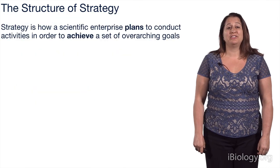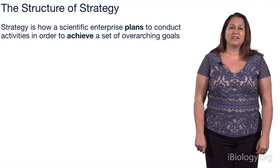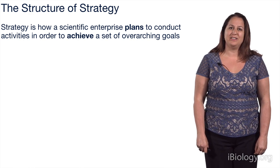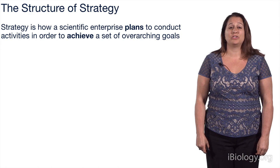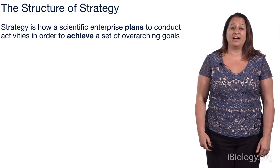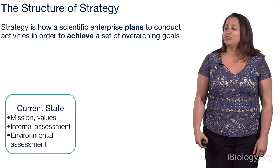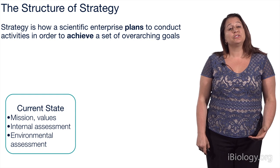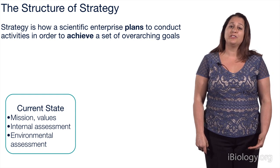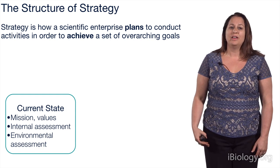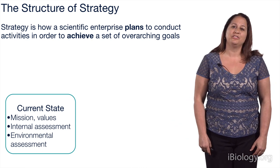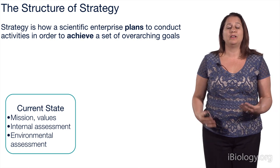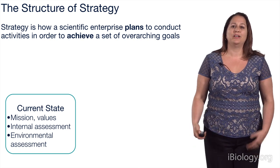Let's start by revisiting the definition of strategy. In an earlier lecture, we defined strategy as being how a scientific enterprise plans to conduct activities in order to achieve a set of overarching goals. When an enterprise is actually developing a strategy, they'll start by thinking about their current state: what are their mission and values, what are their strengths, weaknesses, and core capabilities. They'll also do an environmental assessment, thinking about their operating environment, whether that be a market or a research environment.